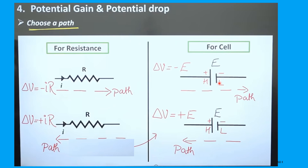For a cell, the bigger line indicates the positive terminal (higher potential) and the smaller line indicates the negative terminal (lower potential), and delta V equals E, the EMF. If the path goes from positive to negative terminal, delta V is minus E. If the path goes from negative to positive terminal, delta V is positive E. These rules are very important.